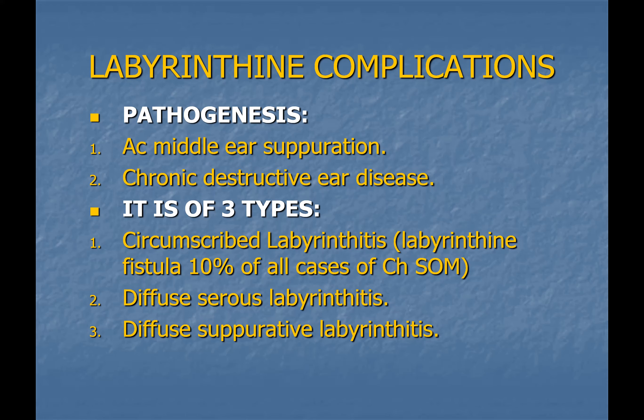In serous labyrinthitis there is intralabyrinthine inflammation without pus formation and it is reversible, whereas in suppurative labyrinthitis there is pyogenic infection with pus formation and permanent loss of vestibular and cochlear function. In diffuse serous labyrinthitis the patient has vertigo and nausea; in severe cases spontaneous nystagmus occurs with fast component towards the diseased ear. In suppurative labyrinthitis, the patient has severe vertigo, a dead ear, and spontaneous nystagmus whose fast component is away from the diseased ear, towards the normal ear.